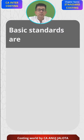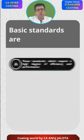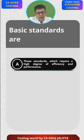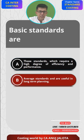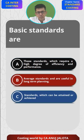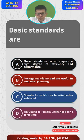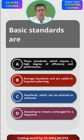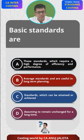Let's do the MCQ for today. Basic standards are — four options: A) those standards which require a high degree of efficiency and performance; B) average standards used in long-term planning; C) standards which can be attained or achieved; D) standards assumed to remain unchanged for a long period of time. Please answer in the comment box below.